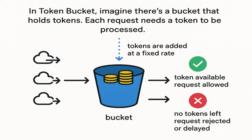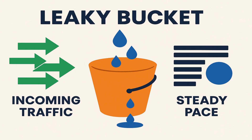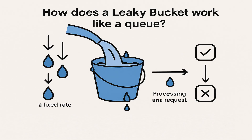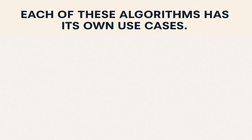Token bucket allows small bursts of traffic as long as tokens are available but limits the overall rate. However, what if your system cannot handle bursts at all — maybe it's a legacy backend that breaks easily under spikes? For that we have the leaky bucket algorithm. Leaky bucket is similar to token bucket but stricter. Think of it like a queue: water is poured into a bucket and it leaks at a fixed rate — one drop at a time, representing one request processed at a time. If too many requests come too quickly, the bucket overflows and the extras are dropped. This ensures requests are processed at a steady, predictable pace no matter how bursty the input is.